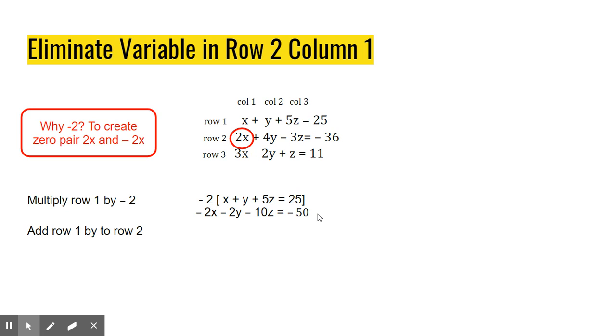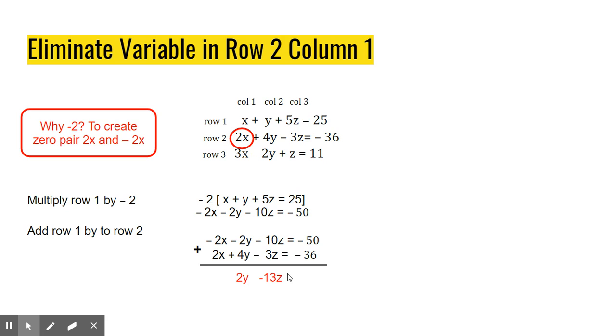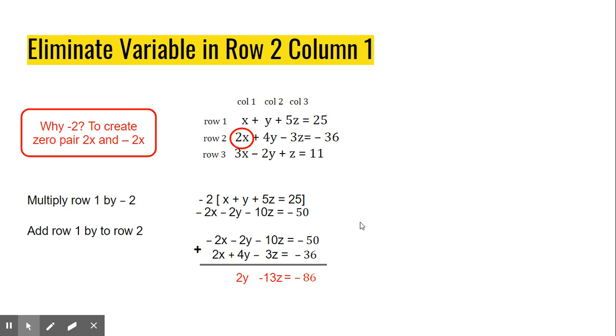Next, I'm going to add Row 1 and Row 2. These are called Row Operations. They're perfectly okay in the context of elimination. So now that I have a negative 2x in this position, when I add it to Row 2, I eliminate the x. And I'm left with 4y minus 2y. That would be 2y. Negative 10z plus negative 3z. That would be minus 13z. And negative 50 plus negative 36. That's going to be negative 86.